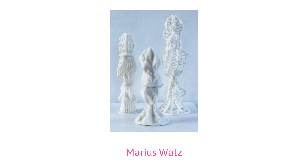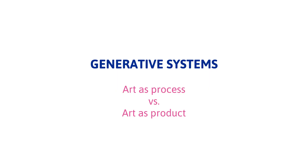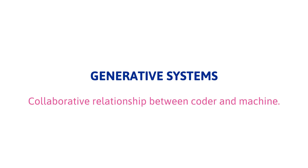Marius Watts uses these techniques to create 3D sculptures. And Casey Rees, the original creator of Processing, also uses these techniques to generate his artwork, both digital and analog. If you're an artist and you're interested in this kind of thing, it's very compelling because the process — the system itself — is as much a part of your art as the product. You can consider the code that you write as much part of the art as the end result itself. It's also a collaborative relationship between you and the machine.